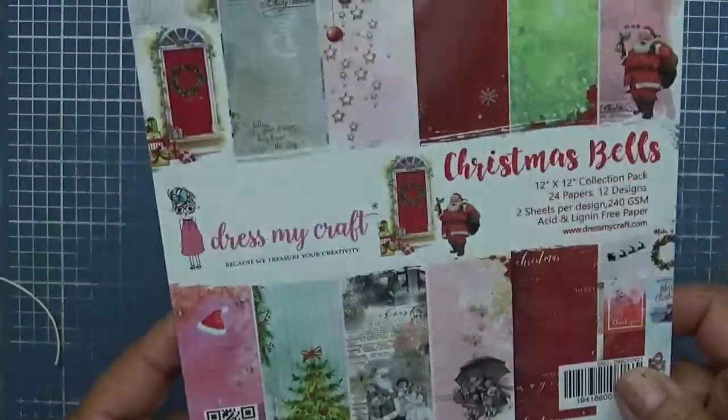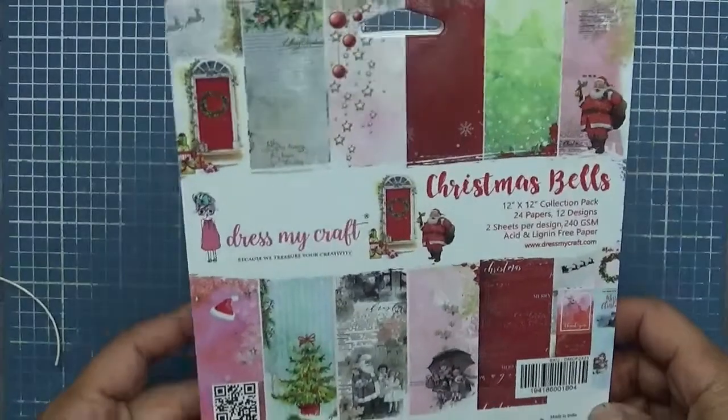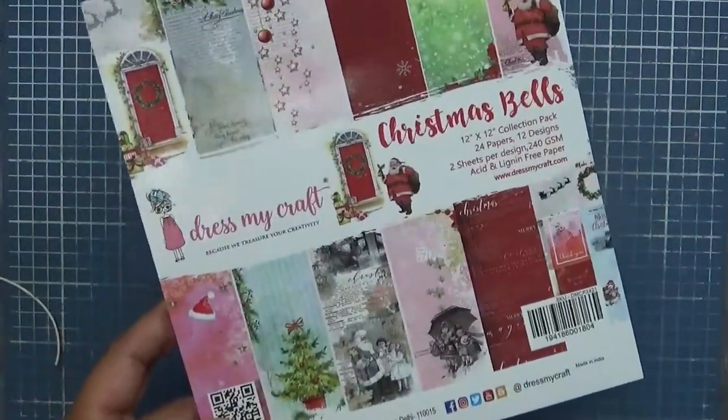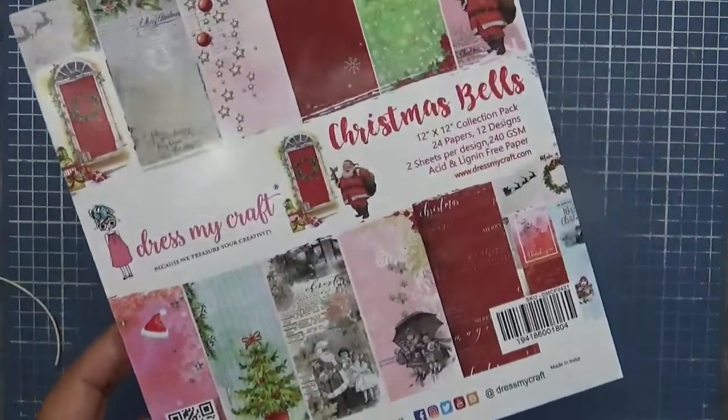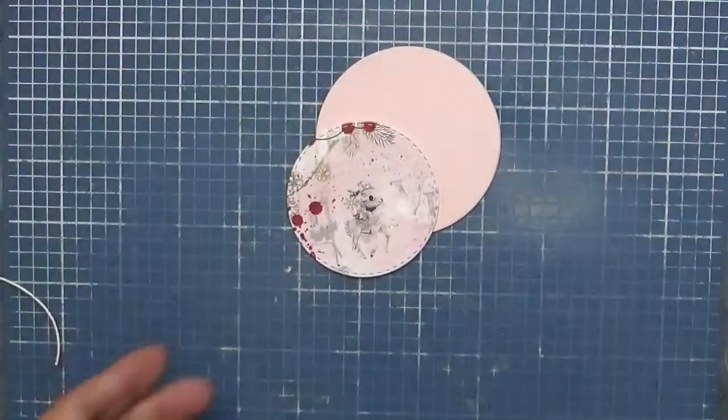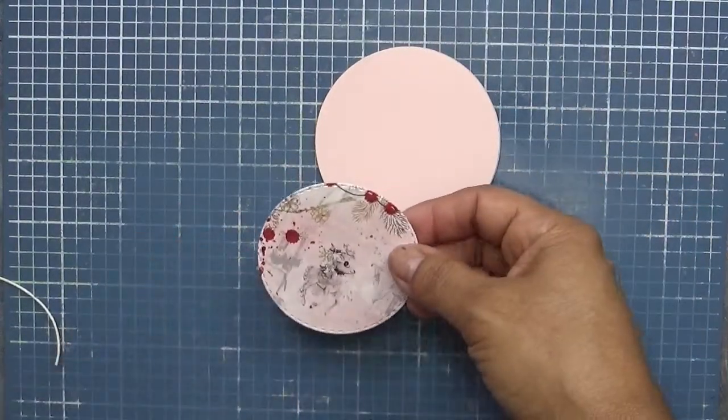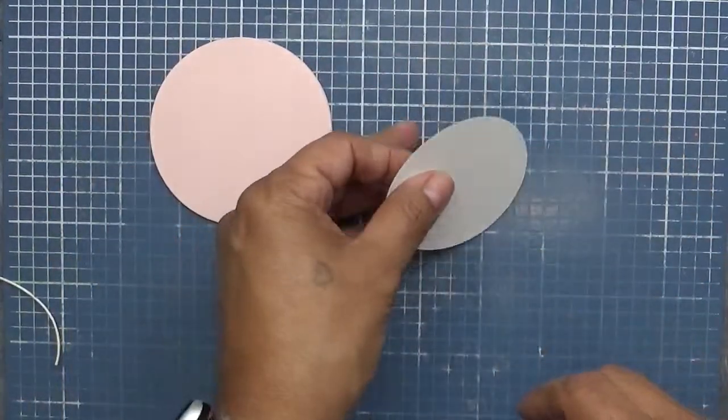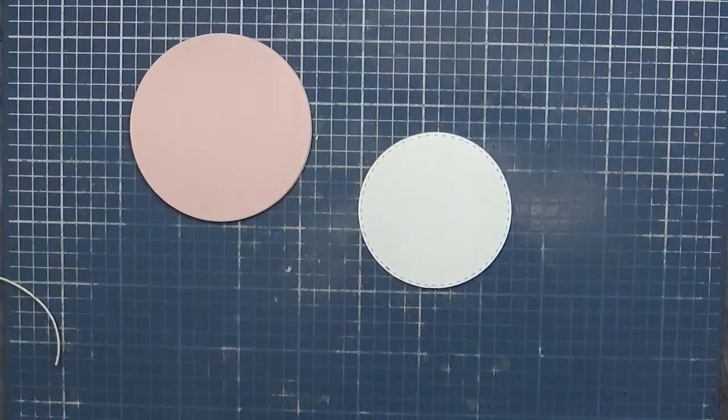So I went through my stash and I have this Christmas Bells, it's by Dress My Craft. I totally forgot about this one and this one and it kind of brings, like I said, I'm not a pink girl, but it brings me back to that pink theme that I was doing during Halloween. Absolutely love this and I actually got this, all my pattern paper I actually get from scrapbook.com. So this is one of the circles that do come in there. I'm not going to pop anything up, we're just going to go ahead and just put it flat.